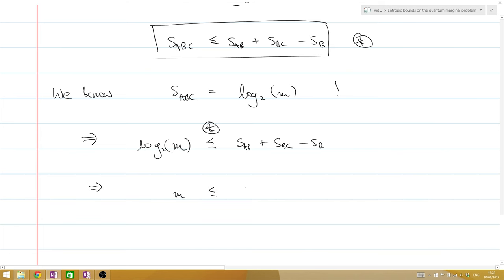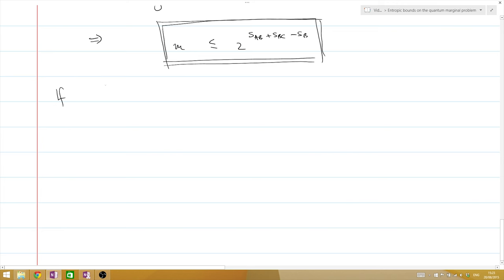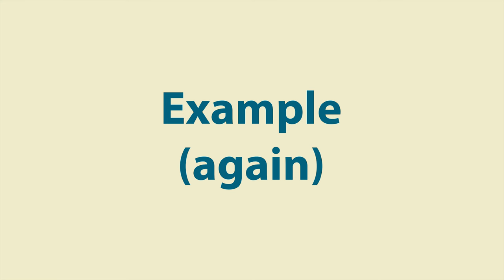And simply taking both left-hand side and the right-hand side to the power 2, we obtain the final bound. One of the consequences of this inequality is that if the right-hand side is strictly less than 1, then there are simply no solutions to the quantum marginal problem.